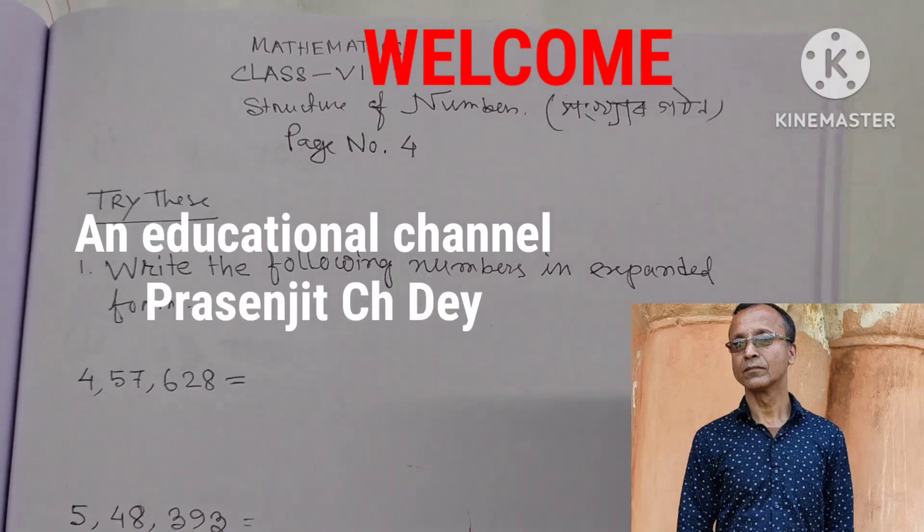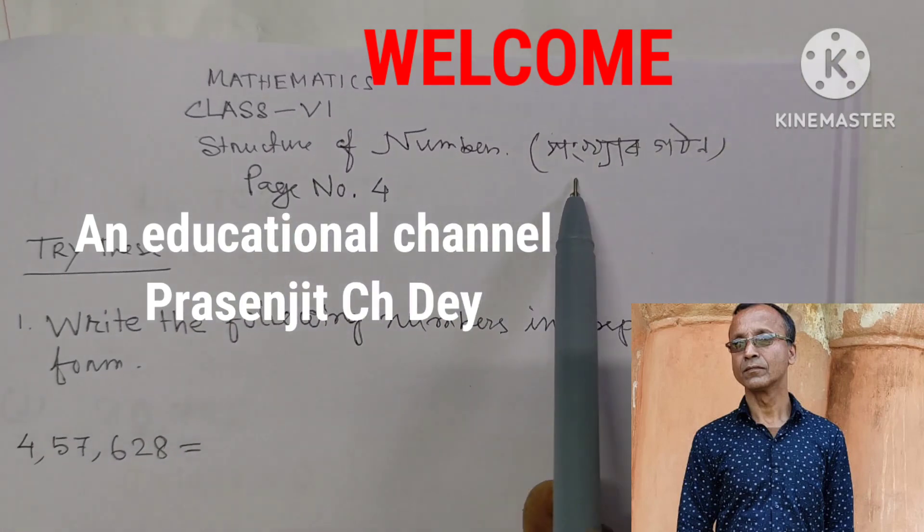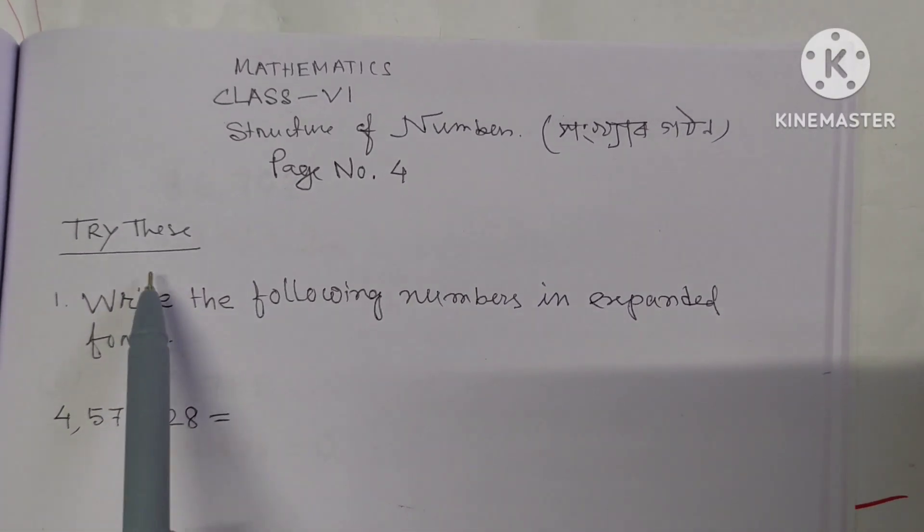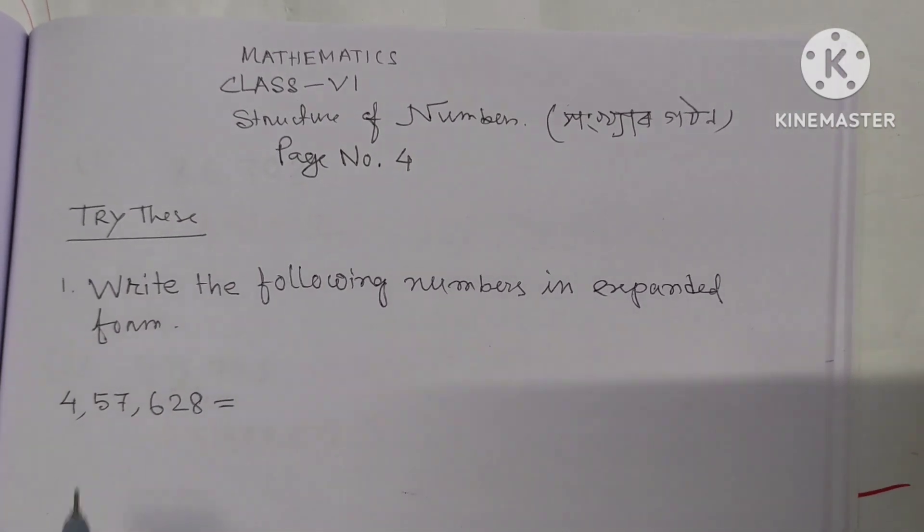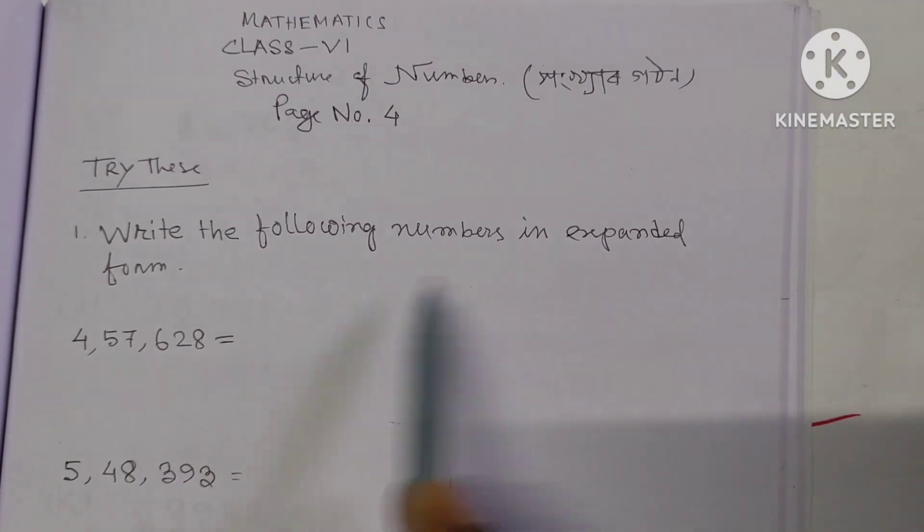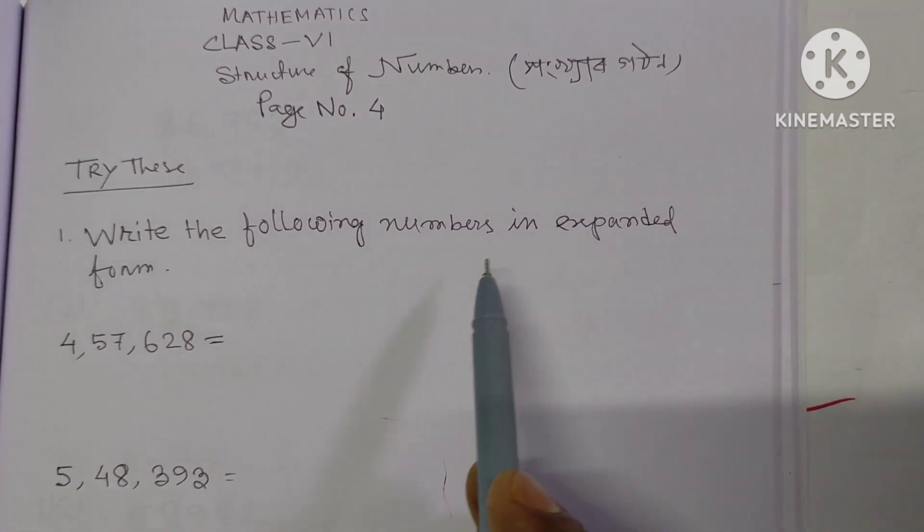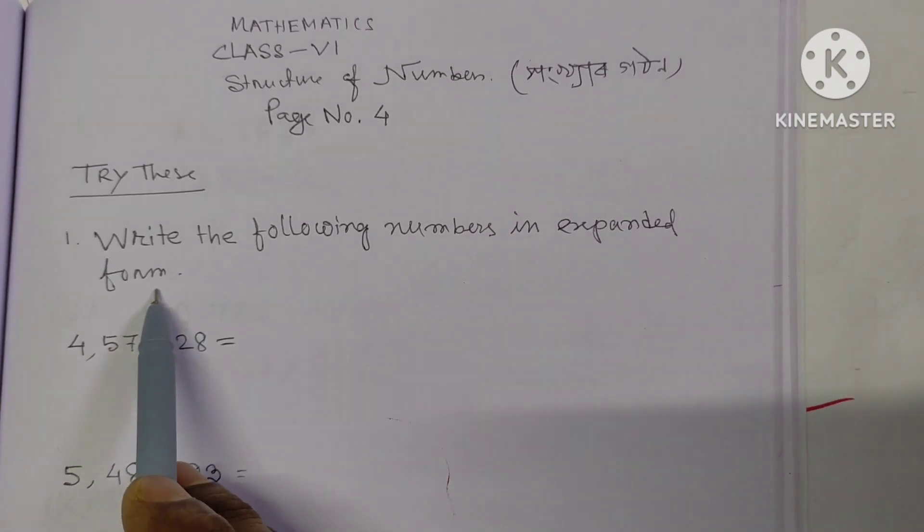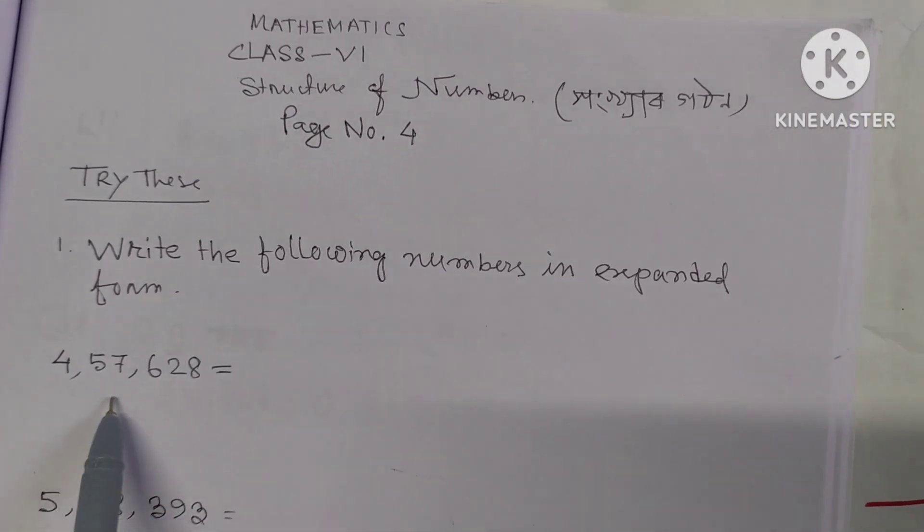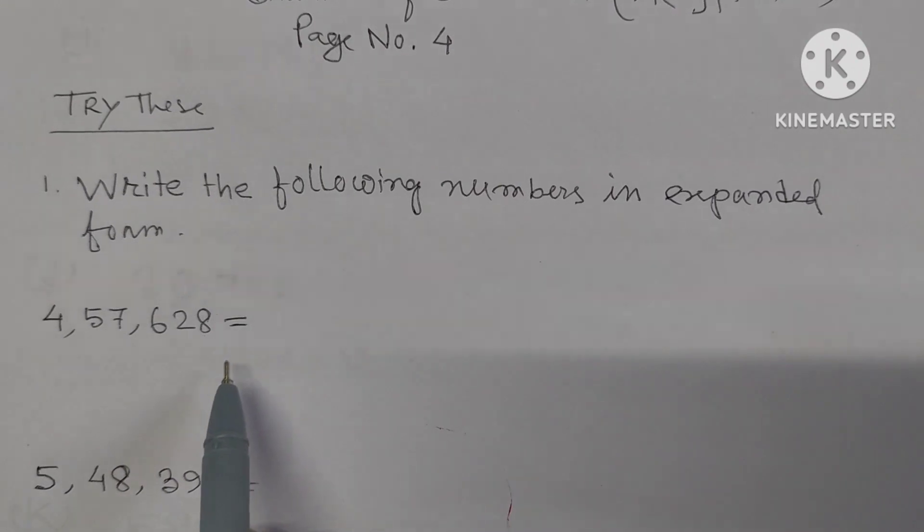My dear viewers and learners, namaskar. Mathematics Class 6, structure of numbers. Write the following numbers in expanded form. First number: 4,57,628. We have to write this in expanded form.